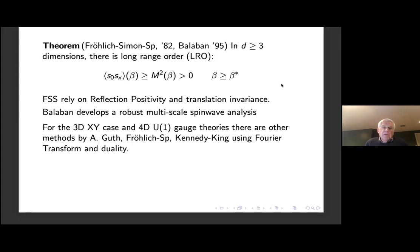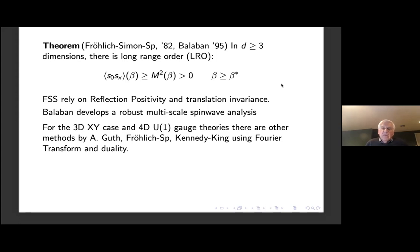In the three-dimensional abelian case — the XY case — there are other techniques that don't require reflection positivity. One of the first is due to Alan Guth, and there was later very nice work by Kennedy and King, which is related to what I'm talking about today. That is basically a lightning summary of what happens for symmetry breaking when you have no disorder. I can pause here for a minute to see whether there are comments or questions about the case without disorder.